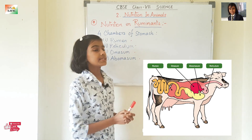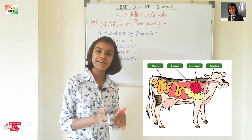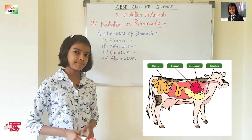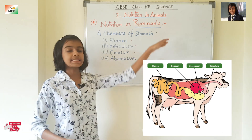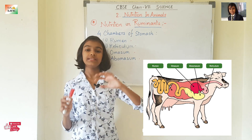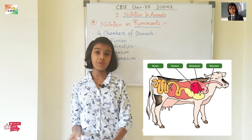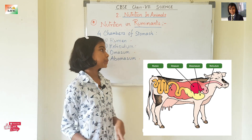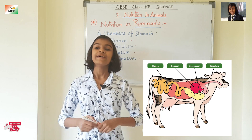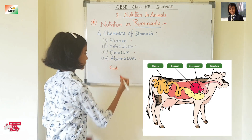The digestive system of ruminants is divided into two steps. In the first step, ruminants half-chew and partially digest the grass and leaves — they do not fully chew it. They partially digest it and then swallow it, unlike human beings who fully chew before swallowing. This partially digested food is known as cud, and it is very important to remember this term.